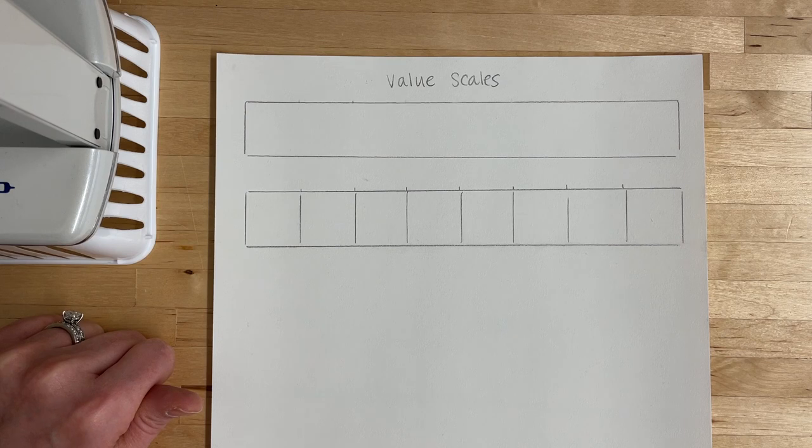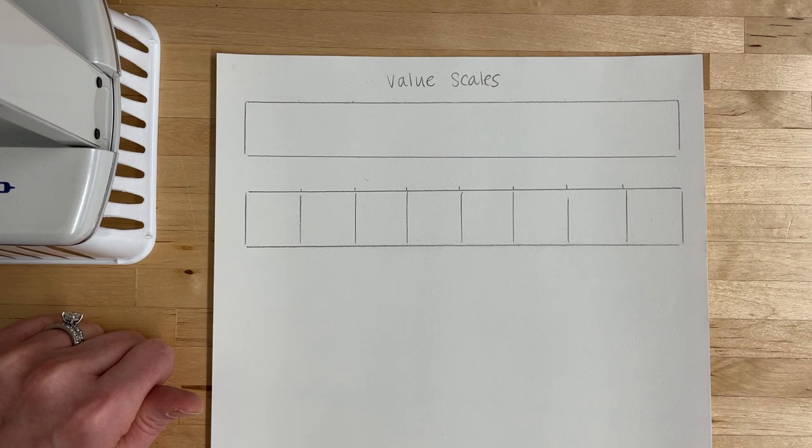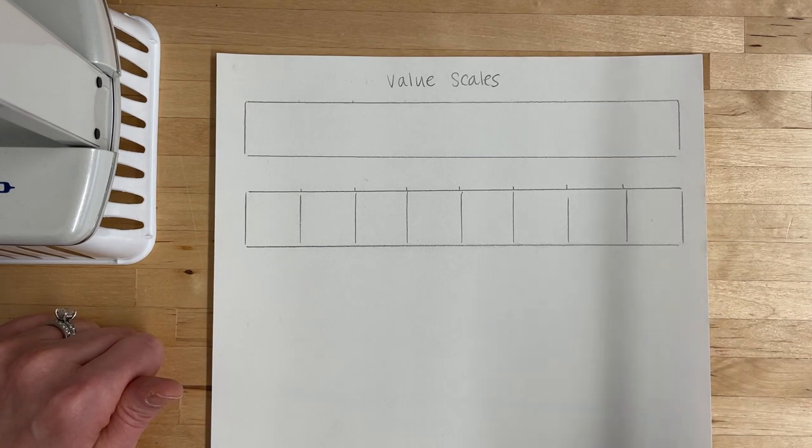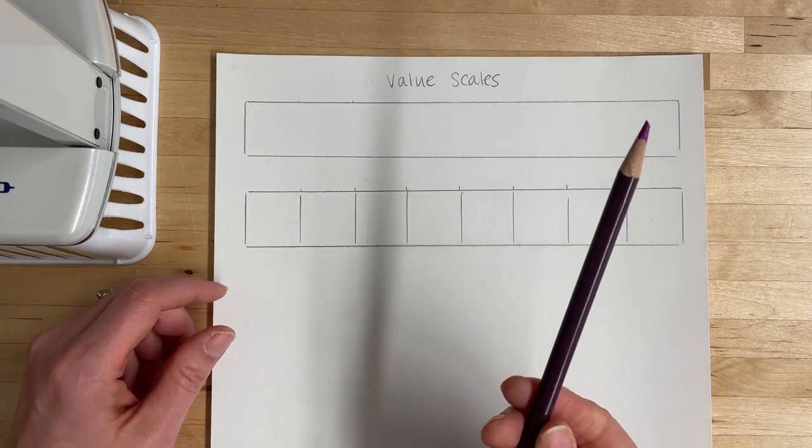We're going to be doing two different value scales. One is going to be a smooth shading value scale just like we did in previous units with the drawing pencils, except this time we don't need to switch between the different types. All you're going to do is grab any color you want of your colored pencil.